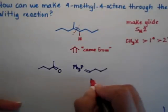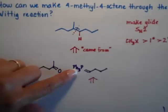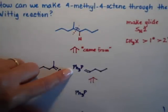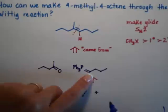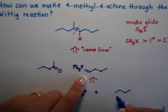By the way, if you want to make the ylide, we're going to take triphenylphosphine, and we're going to react it with 1, 2, 3, 4. So you have 4 carbons, and we're going to put a bromide.